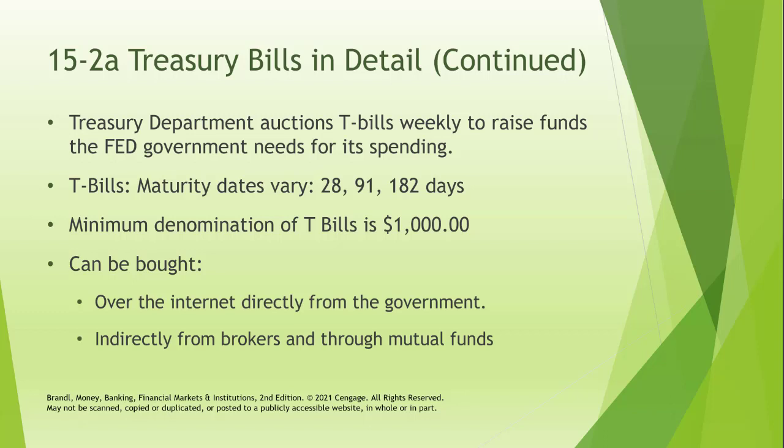What the government actually does is carry out a Dutch auction every week to auction T-bills and raise funds for the federal government. Most bids that come in are from major players like investment banks. The maturity dates for these T-bills could be 28 days, 91 days, or even 182 days. It's very rare to find newly issued T-bills beyond that level of maturity.